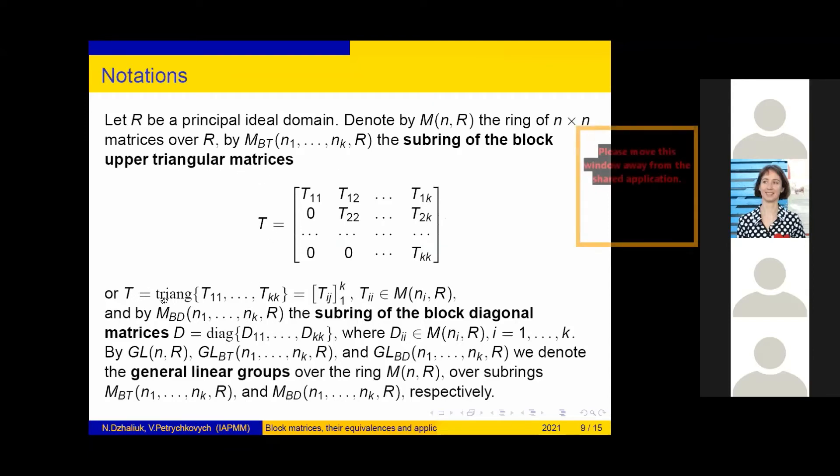And by M_BD the subring of the block diagonal matrices D. By GL_n(R), GL_BT(n_1,...,n_k,R), and GL_BD(n_1,...,n_k,R), we denote the general linear groups of the rings M_n(R) and over subrings M_BT and M_BD respectively.